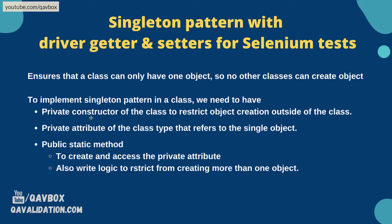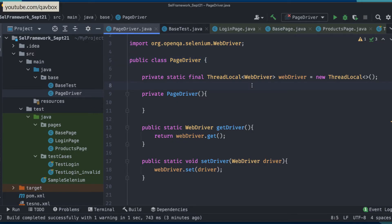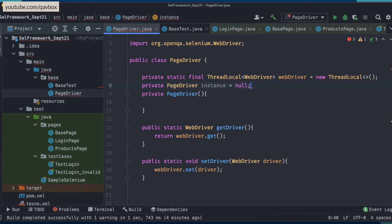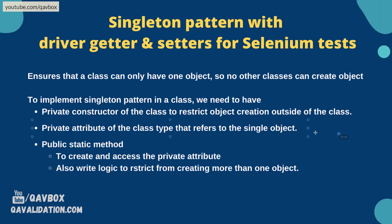The second step is to create a private class variable of the class type itself. Just like how we create 'private String str', we now create 'private PageDriver instance = null'. This is a private attribute — you can also call it a class variable — of type PageDriver.